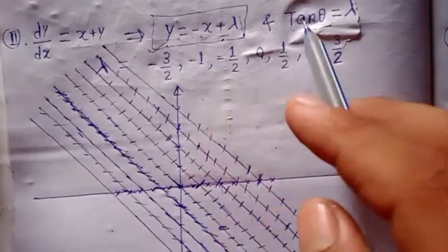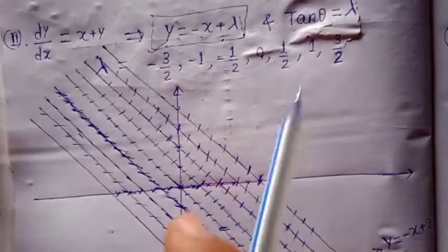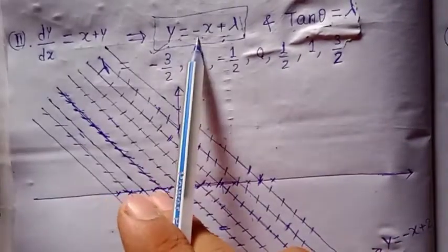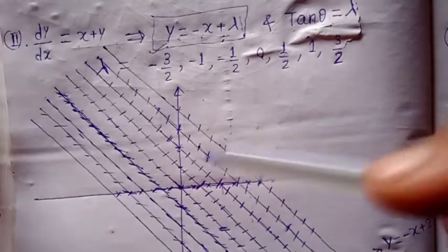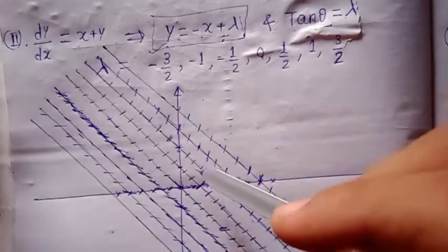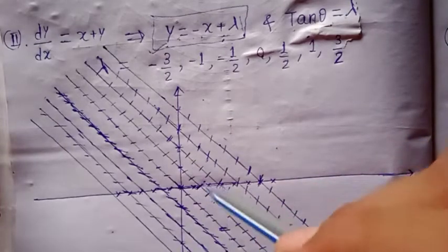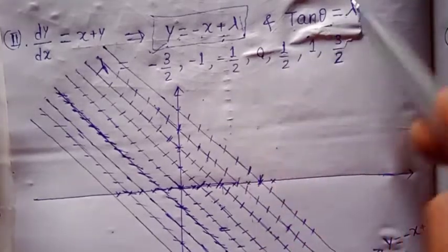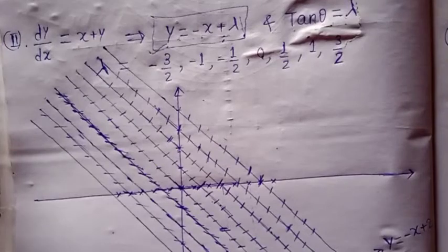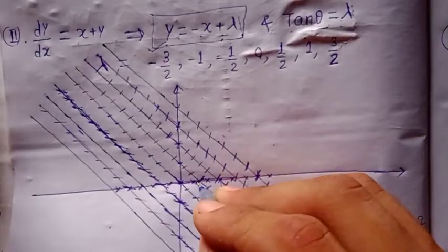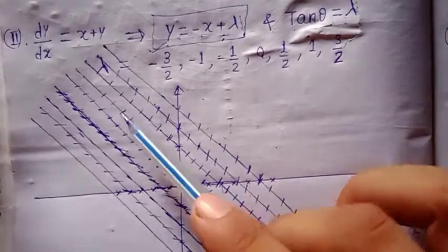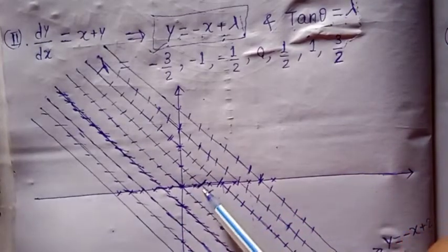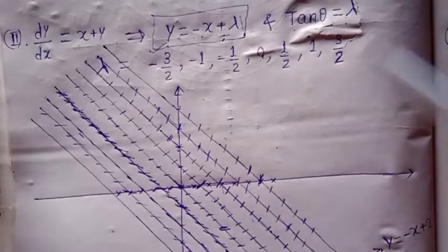Similarly, for lambda equal to 1/2, the isocline is y equal to minus x plus 1/2. This is also a line inclined at 135 degrees with the positive x-axis, parallel to the previous isocline. For lambda equal to 1/2, theta will be tan inverse of 1/2, which is approximately 26.5 degrees. So the line segments on this isocline will be inclined at 26.5 degrees with the positive x-axis, all parallel to each other.